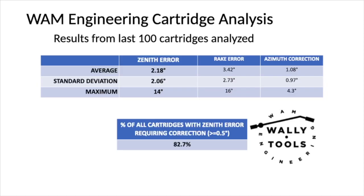Most head shells won't offer more than 5 degrees of rotation of the cartridge. Of the last approximately 100 cartridges we've analyzed here at WAM Engineering, the average Zenith error is about 2.2 degrees, but we have seen error as high as 14 degrees, with no correlation between the price of the cartridge and the amount of error exhibited. The percentage of cartridges with less than or equal to half a degree of error is less than 20%, meaning 4 out of 5 cartridges would benefit from some Zenith error correction.